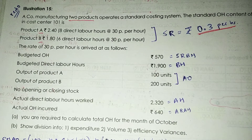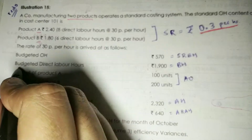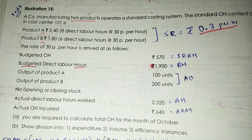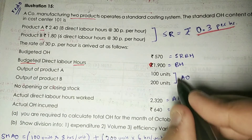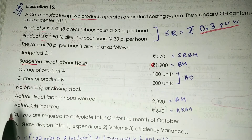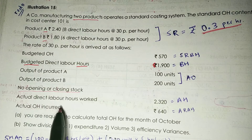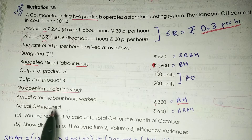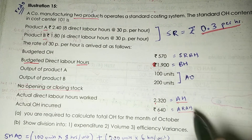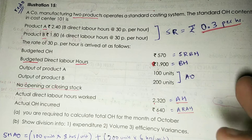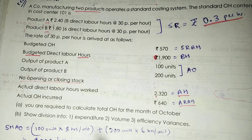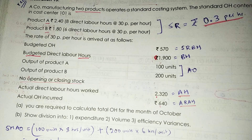Budgeted overhead is given — this is your SRBH. Budgeted direct labor hours BH = 1,900. Output of product A and product B are your actual outputs, with no opening or closing stock. Actual direct labor hours worked AH = 2,320. Actual overhead incurred = 640, which is your ARAH. You are required to calculate total overheads for October and show the division into expenditure (budget) variance, volume variance, and efficiency variance.